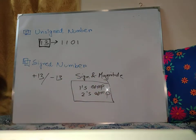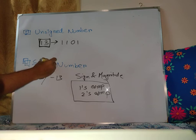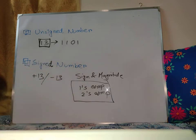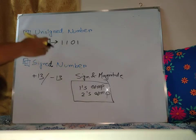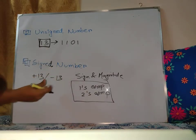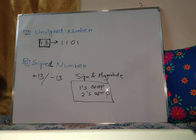1's and 2's complement actually represent the number in the negative version. Basically, this is the signed number. The signed number is used for negative numbers. In the case of a binary number system, we represent the number for minus using sign and magnitude, 1's complement, and 2's complement. We have a table that will give us the 1's and 2's complement.